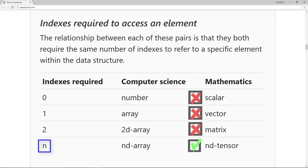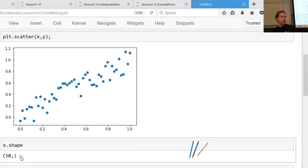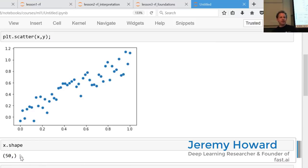In computer science, we stop using words like number, array, and 2D array, and we start using the word multi-dimensional array, or the word nd array. I very rarely use words like vector and matrix, because they're kind of meaningless, specific examples of something more general, which is they're all n-dimensional tensors.